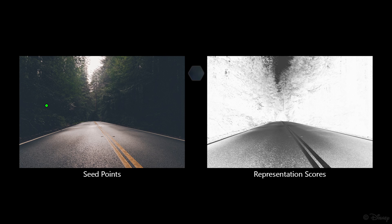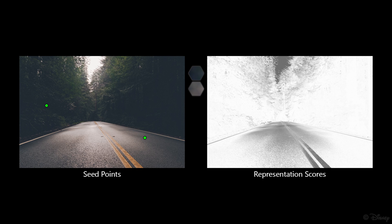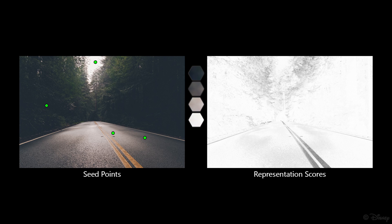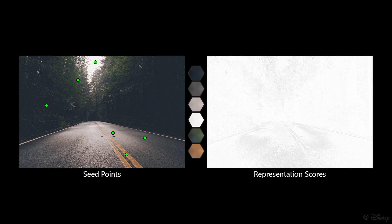We will now present our method. We start by determining a set of prominent colors in the image, called the color model. We gradually add new color distributions estimated from the neighborhood of selected seed pixels until the whole image is well represented. As a result, we determine the number of distributions automatically. The seed locations are determined with the help of representation scores.